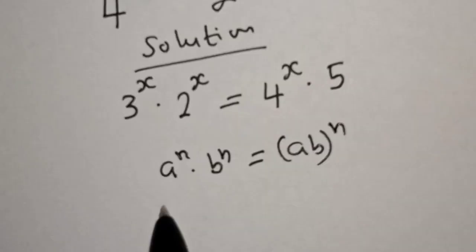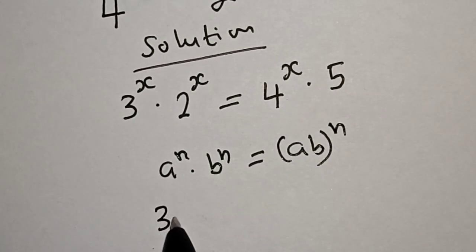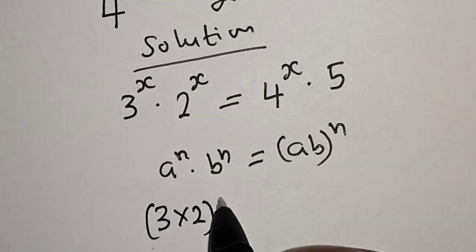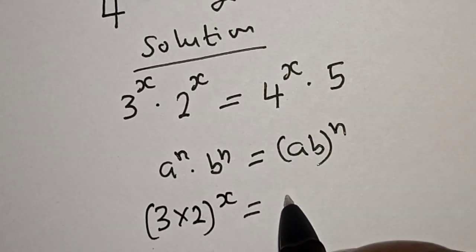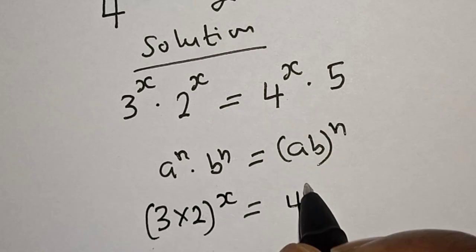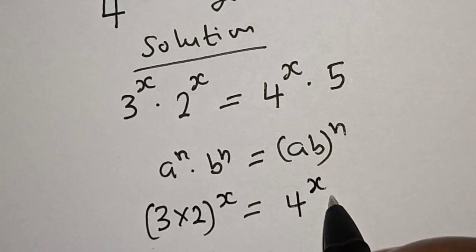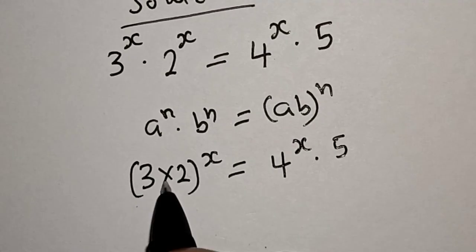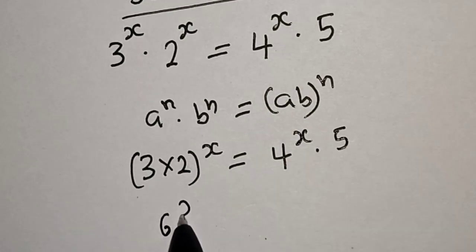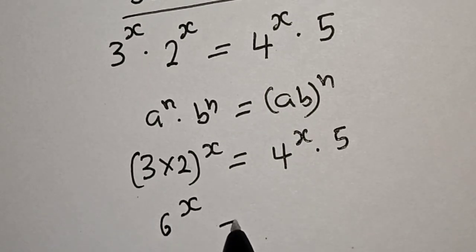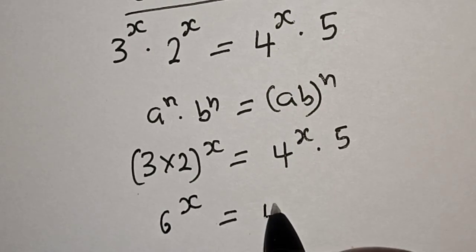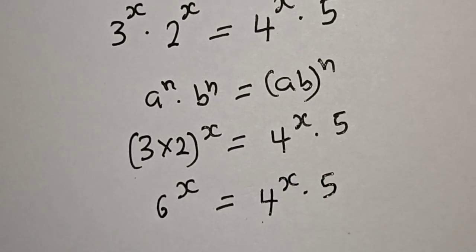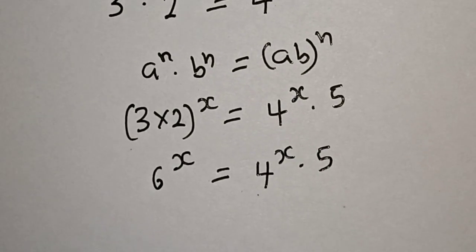So this becomes 6 raised to power x is equal to 4 raised to power x multiplied by 5. Let's take the log of both sides.